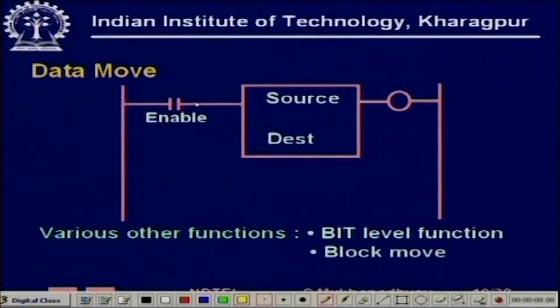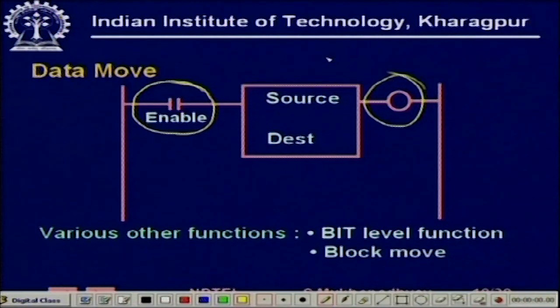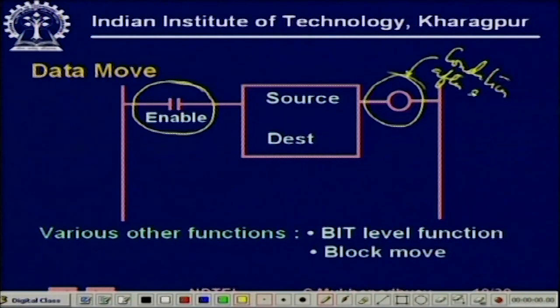Next is data move. Everything is depicted as a rung because in RLL everything is a rung. The data move will take place depending on whether the enabling logic is satisfied. Data will move from source to destination, and if there is some address failure or after the data has moved this output coil can become 1. You can also have bit manipulation functions, various kinds of block moves, and logical instructions.